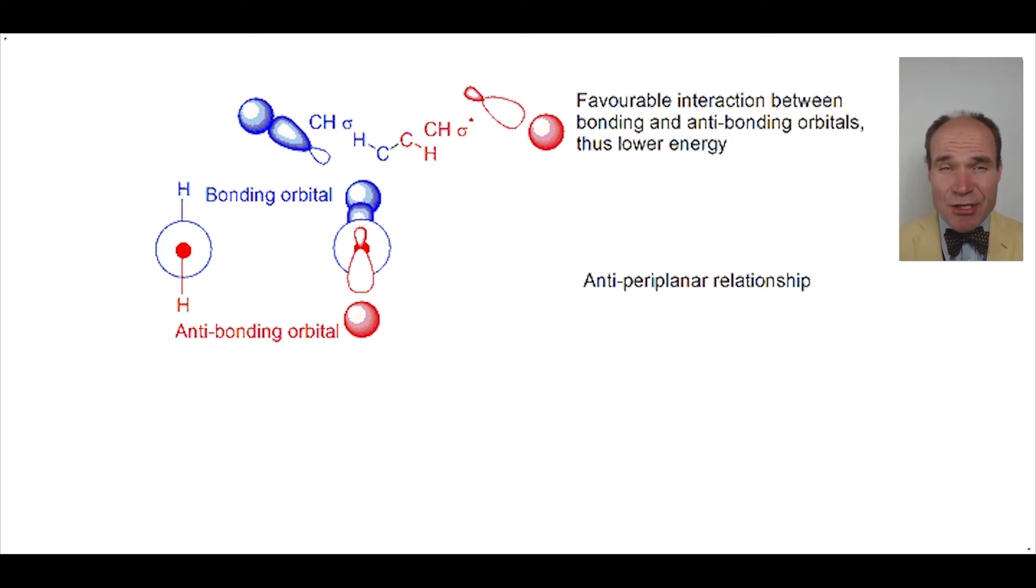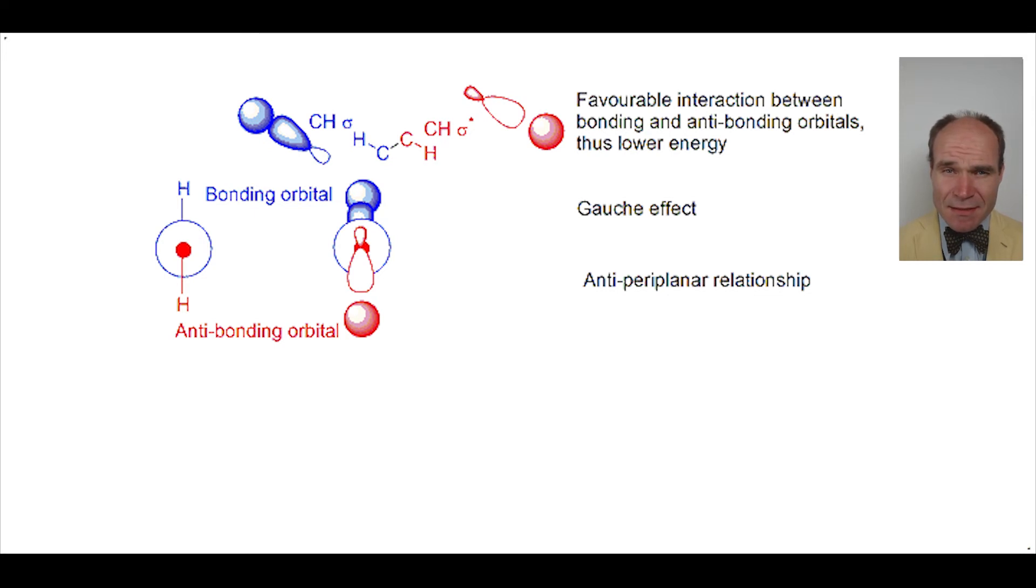This effect is generally described as the Gauche effect. It can vary in strength depending on the substituents. If you replace one of the hydrogens with a fluorine, the Gauche effect would become much stronger. There's a subclass of Gauche effect called an anomeric effect. We find it in sugar and sugar-like molecules.